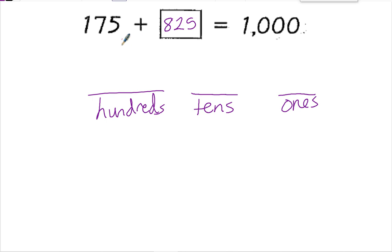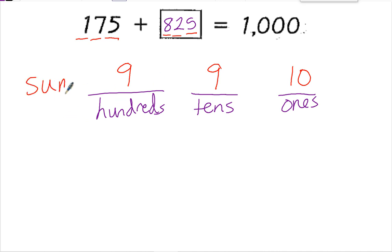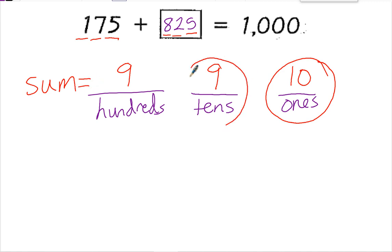In the ones place, if I add my ones places together, that's 5 and 5 — 5 plus 5 equals 10. So I need to have 10 ones when I add the ones place together. 7 plus 2 is 9, and 1 plus 8 equals 9 as well. So I need the sum to equal 10 in the ones place, 9 in the tens place, and 9 in the hundreds place.